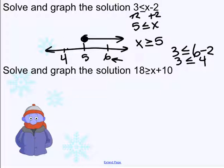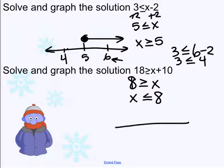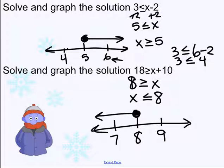And the last one, same idea. Subtract 10 on each side and I get 8 is greater than or equal to x. But I need my variable on the left side. So I say x is less than or equal to 8. And I can graph that by having 8, 7, 9, a closed dot, and I want the ones that are smaller, less than 8. Well, I hope this is helpful for your homework and for studying.